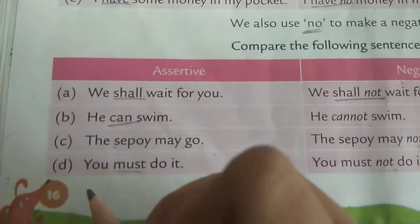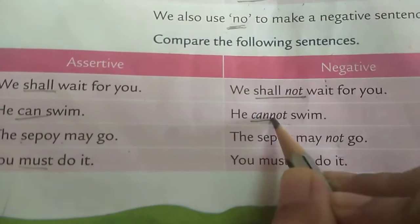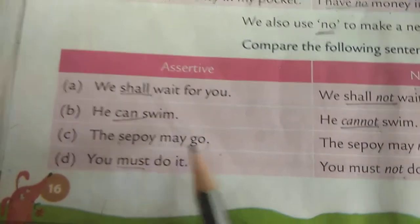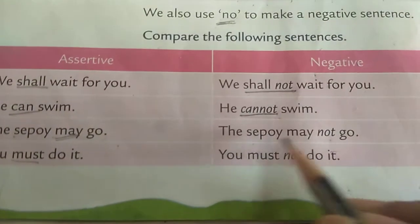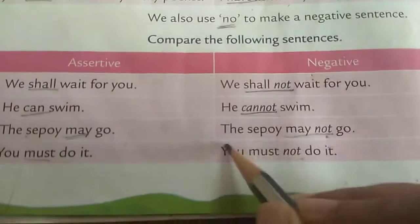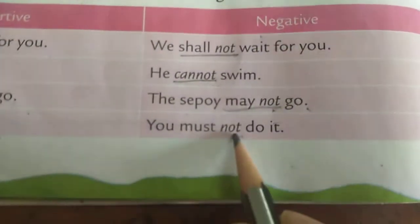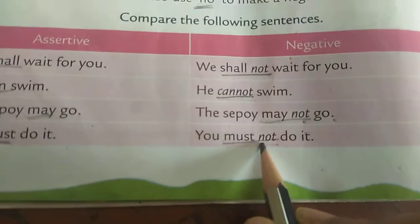Next sentence: 'He can swim.' The helping verb is 'can' — it becomes 'He cannot swim.' Then: 'The sepoy may go.' The helping verb is 'may' — it becomes 'The sepoy may not go.' Last sentence: 'You must do it.' The helping verb is 'must' — it becomes 'You must not do it.' After each helping verb, we add 'not.'